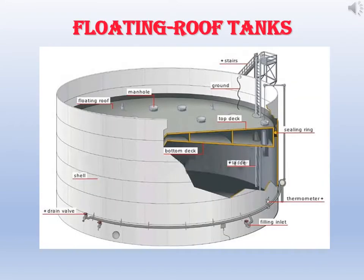Floating roof tanks. The picture explains the meaning — the floating roof is not fixed; it moves up and down according to the liquid level. The roof stays just above the top portion of the liquid level. When the liquid level increases the roof goes up, and when it comes down the roof moves down. So there is no or minimum vapor space between the liquid and the roof, meaning vaporization is at a minimum.